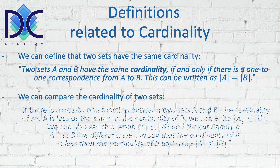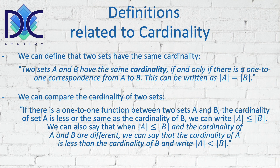We can compare the cardinality of two sets. When we have a one-to-one function between sets A and B, and the cardinality of A is less than or equal to the cardinality of B, we write |A| ≤ |B|. We can also say that when the cardinality of A is smaller than or equal to B and the cardinalities of A and B are different, then we can say that the cardinality of A is strictly less than the cardinality of B, and we write |A| < |B|.